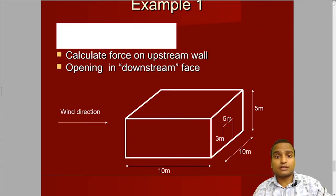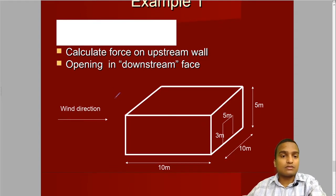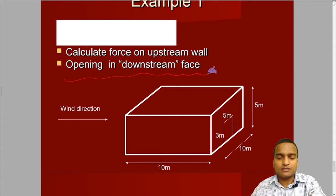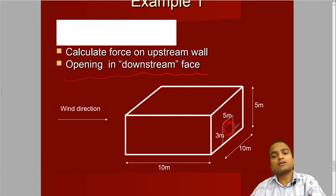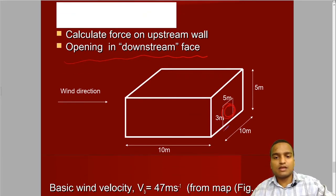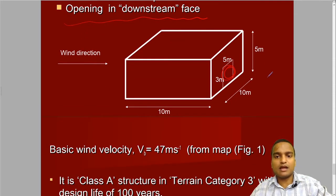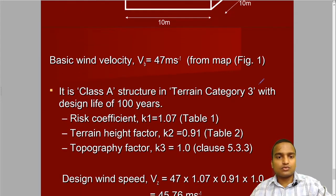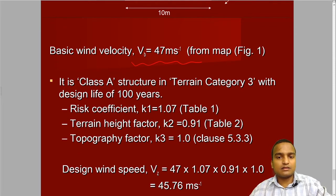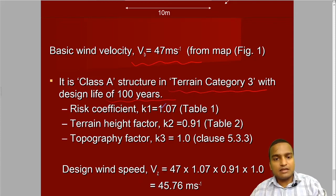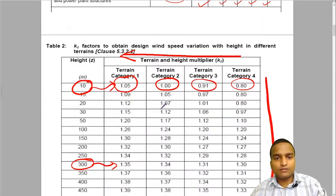This is example one. We are asked to calculate the force on upstream bar. It is also given there is opening in downstream phase. This opening affects the internal coefficient. This is the dimension. We can very easily calculate the plan ratio and height ratio. Plan ratio is 10 meter by 10 meter and height ratio is 5 meter by 10 meter. Basic wind speed we have calculated for Dehradun is 47 meter per second from the map. The terrain category is 3. Why I have taken terrain category 3? Because Dehradun is a town or city with design life of 100 years.